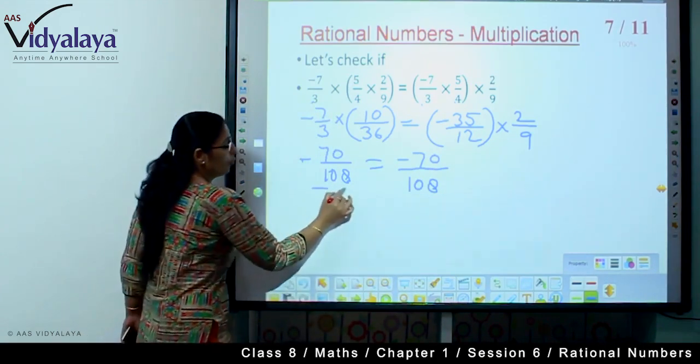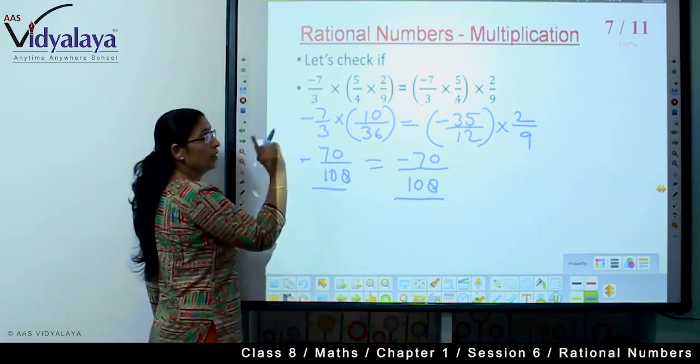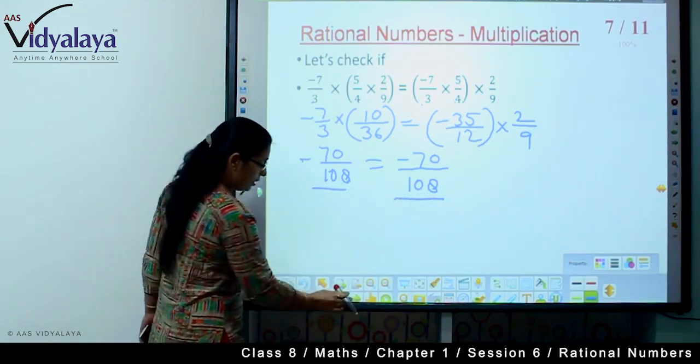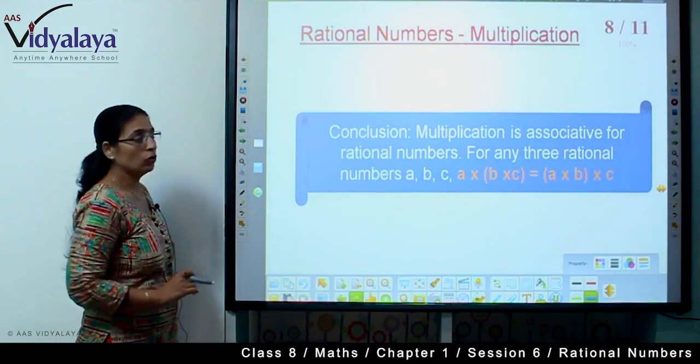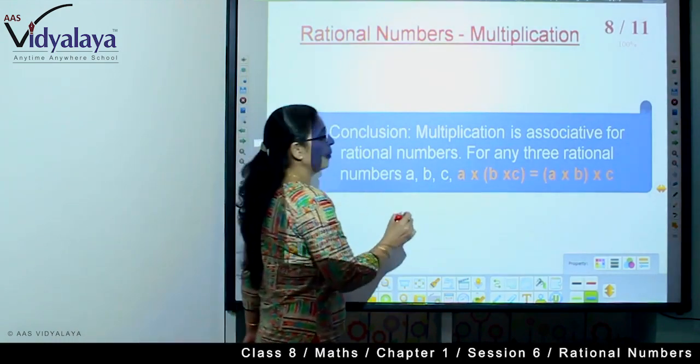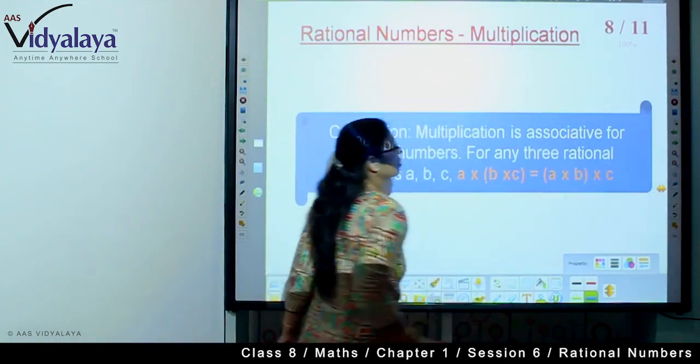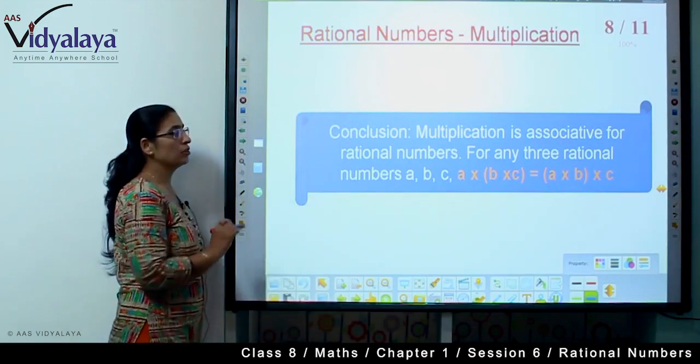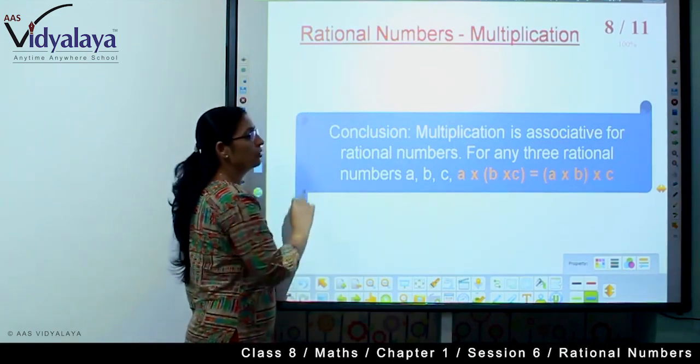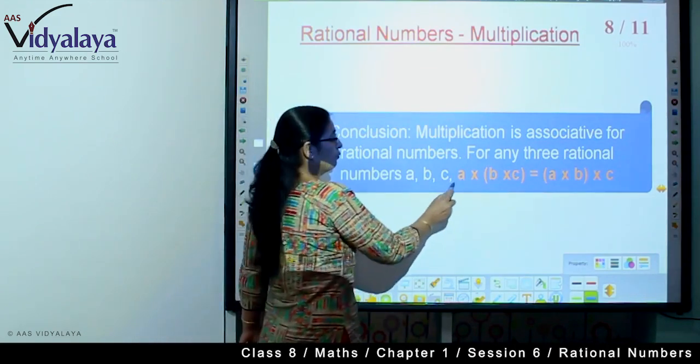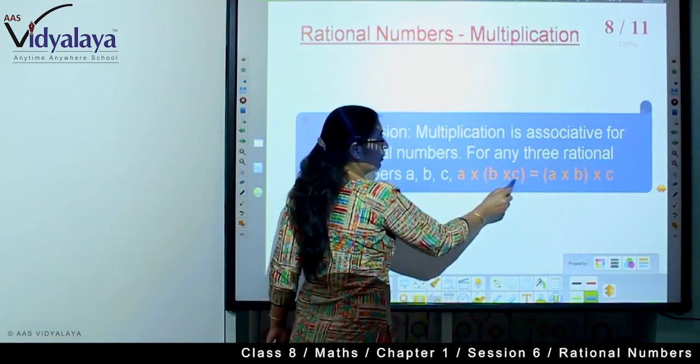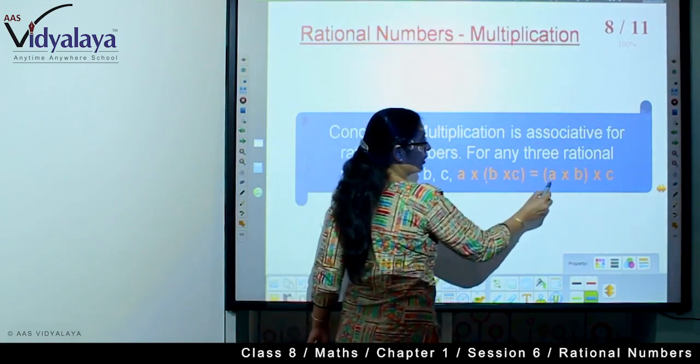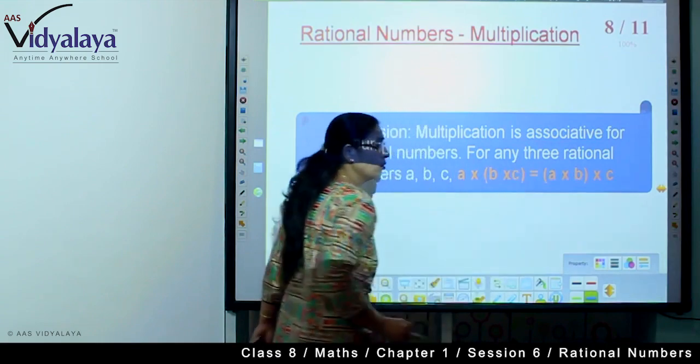So 7 into 10 is 70, 36 times 3 is 108. Here 2 fives are 10, 2 threes are 6, minus 70 upon 108. 9 twos are 18. We are getting both digits equal, so yes!